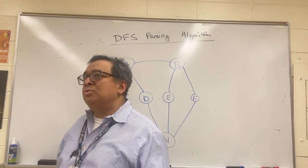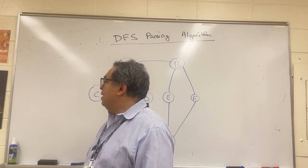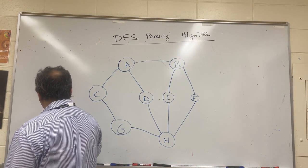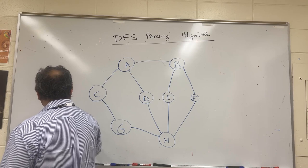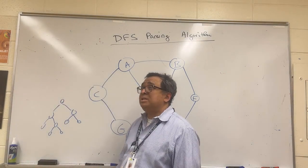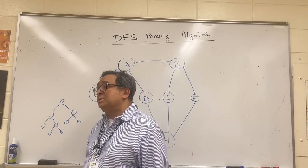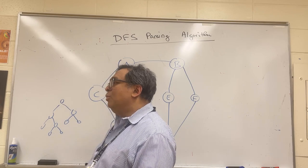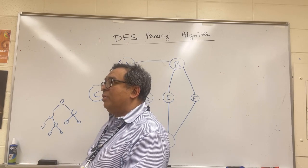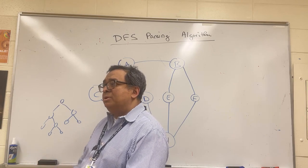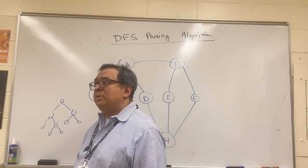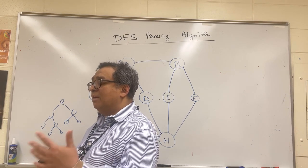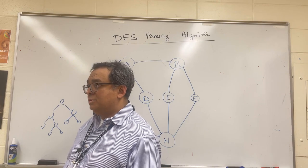We're going to talk about two algorithms today. When we had a tree — some kind of binary tree — we discussed four particular parsing algorithms: pre-order, post-order, in-order, and level-order. These fall into two categories: pre-order, in-order, and post-order are depth-first searches, and level-order is a breadth-first search.